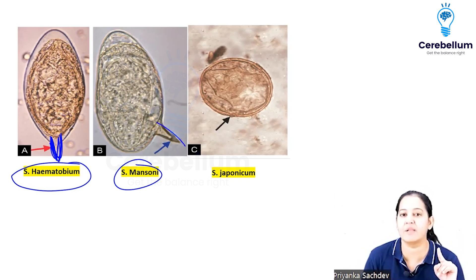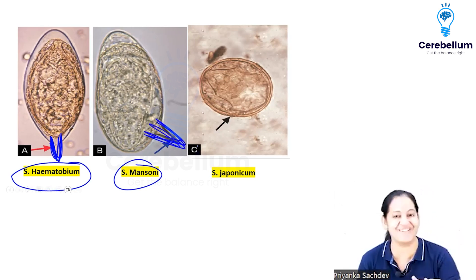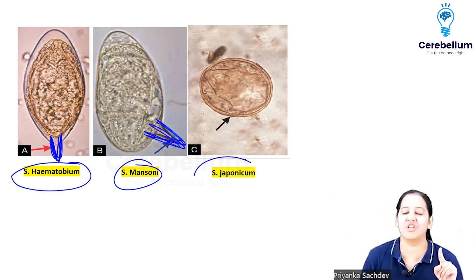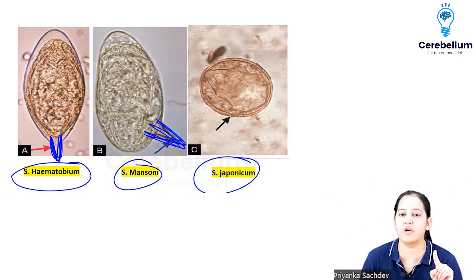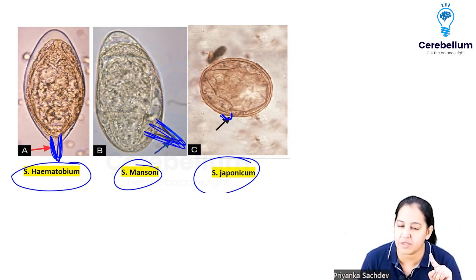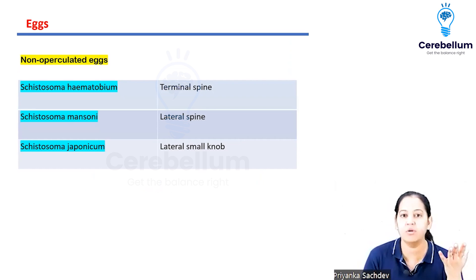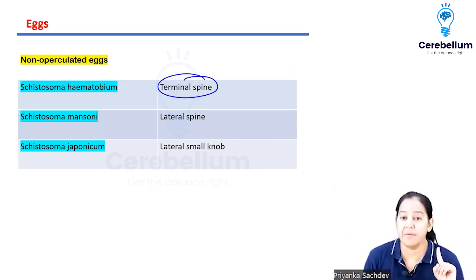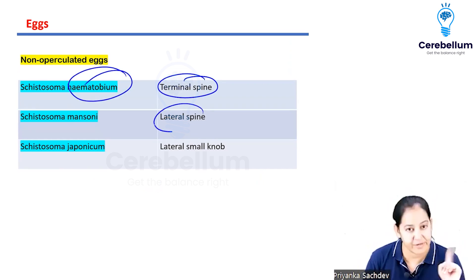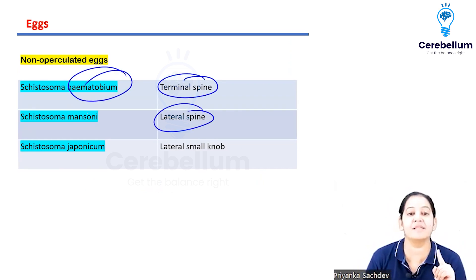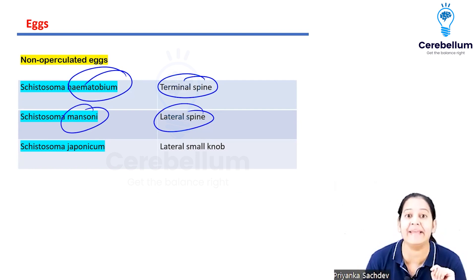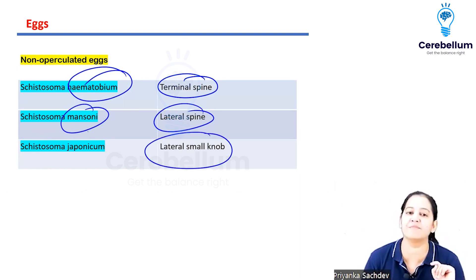Regarding the eggs: haematobium has a terminal spine, mansoni has a lateral spine, and japonicum has a knob - not a spine, but a knob. So remember: haematobium = terminal spine, mansoni = lateral spine, japonicum = lateral knob.